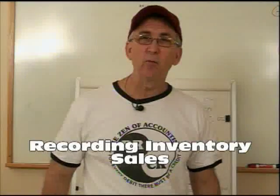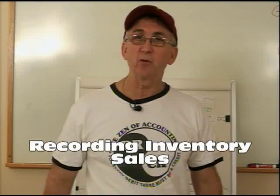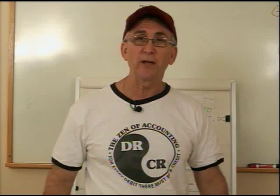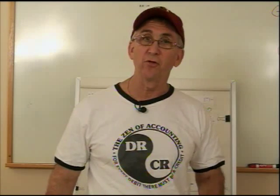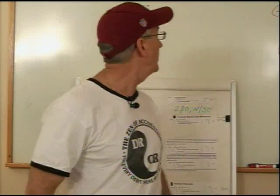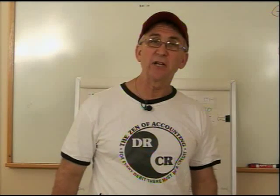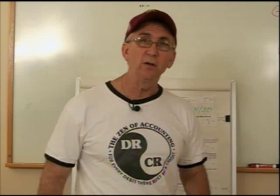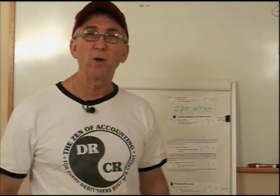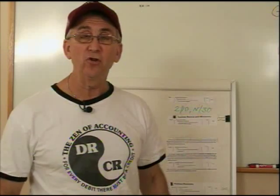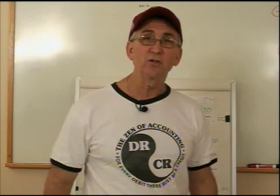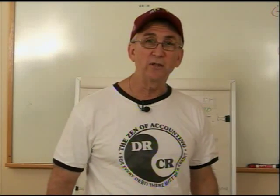Hi, this is Bruce the Accounting Guy again and we're working on a chapter on merchandising. There are two different ways to account for inventory on the merchandising for the sales and the purchases. One is the gross invoice method and the second is the net invoice method. We're going to use the gross invoice method, and that's what I want you to concentrate on. So as you're doing your journal entries, do them for the gross invoice method.